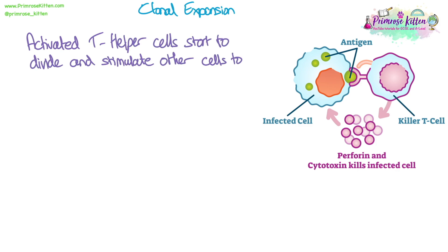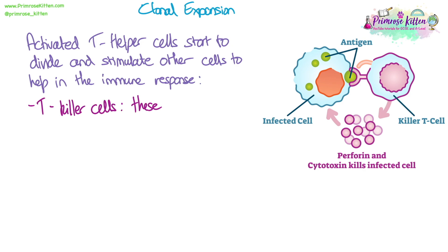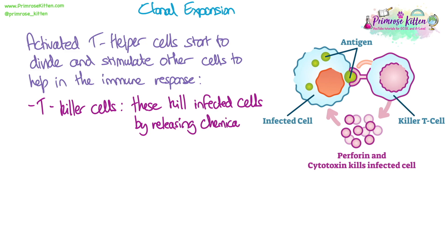Once the T helper cell has been activated, it divides by mitosis and stimulates other cells to help. Activated T helper cells stimulate or activate T killer cells, which go to infected cells and destroy them using chemicals such as perforin and cytotoxins — which is why they are sometimes called cytotoxic T cells. Perforin damages the cell membrane, punching holes so that internal contents leak out and the cell is destroyed.